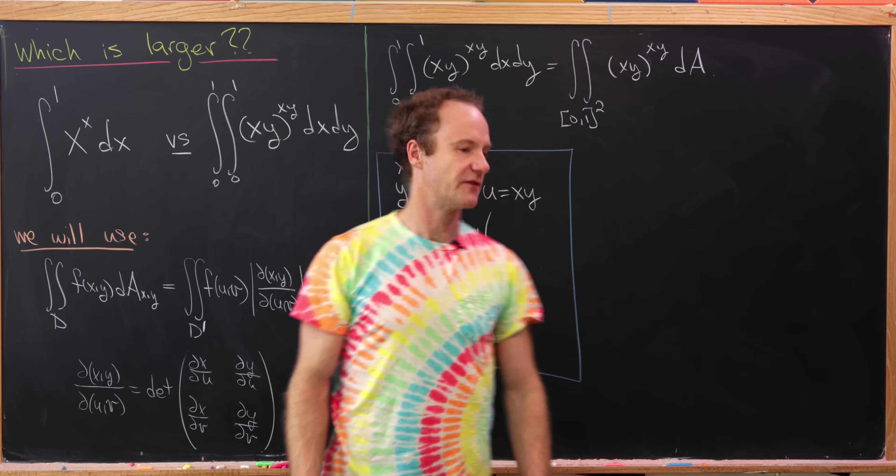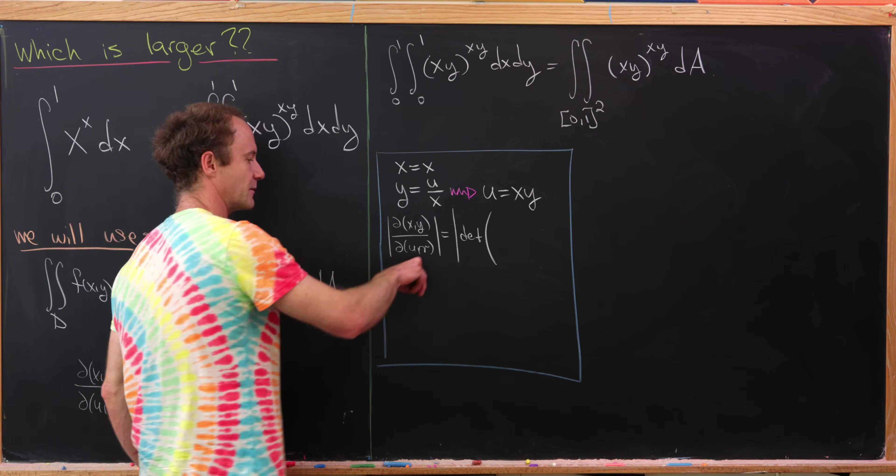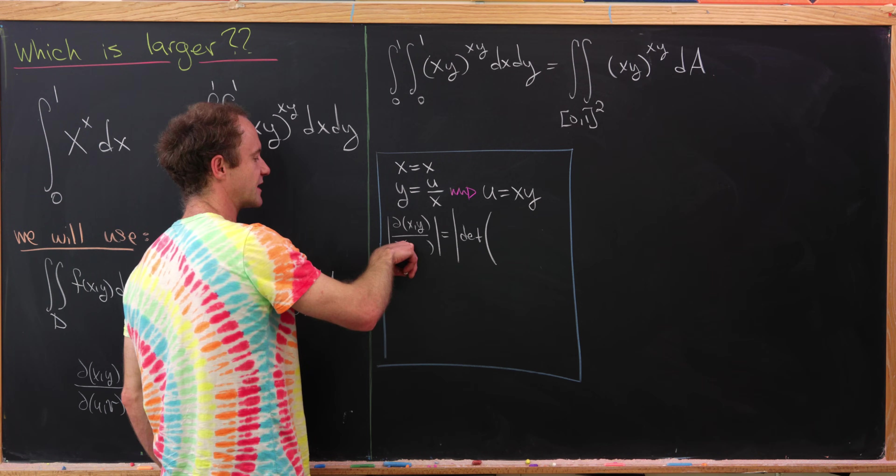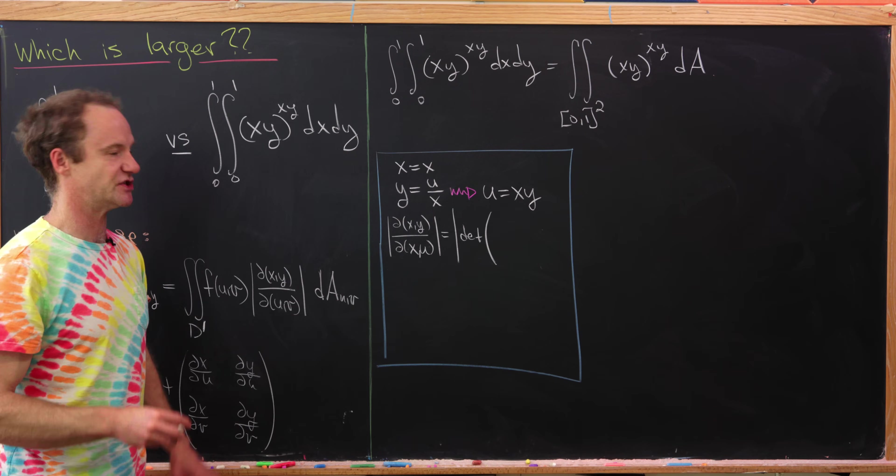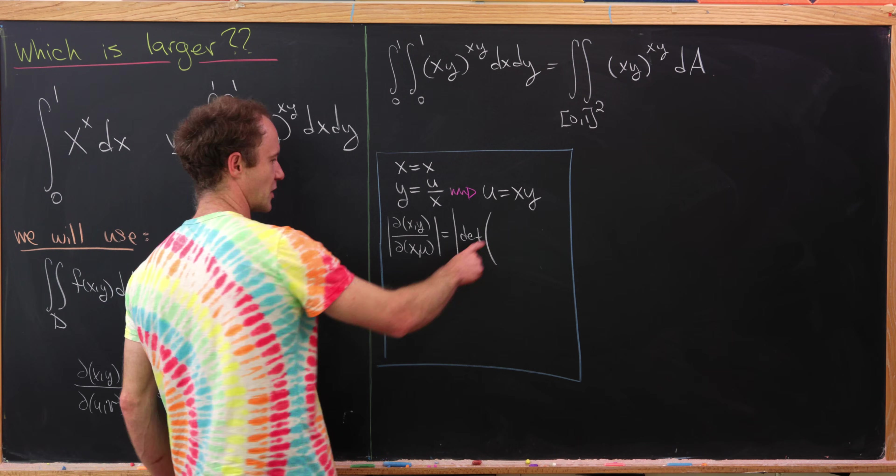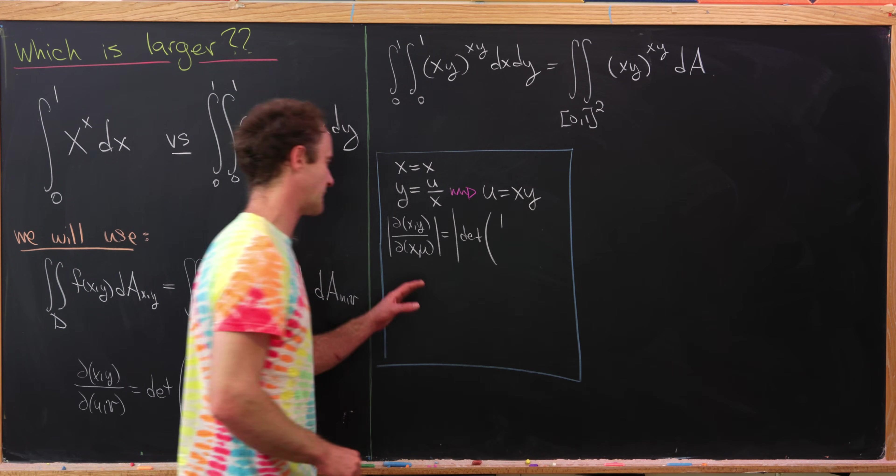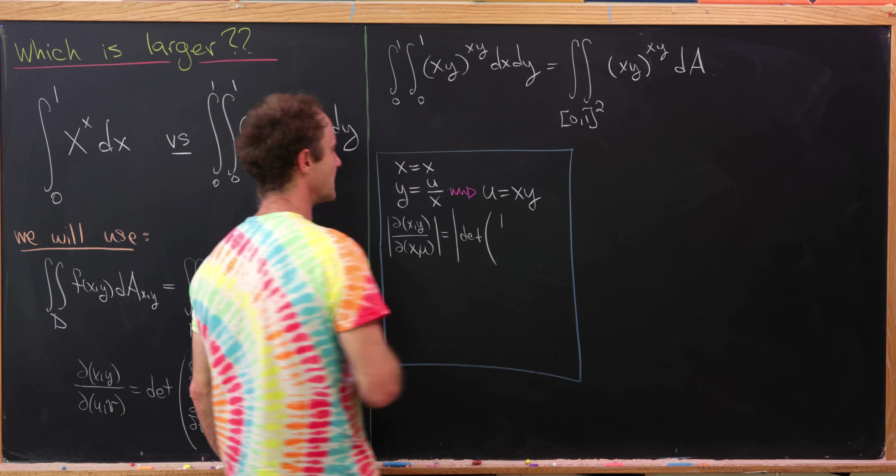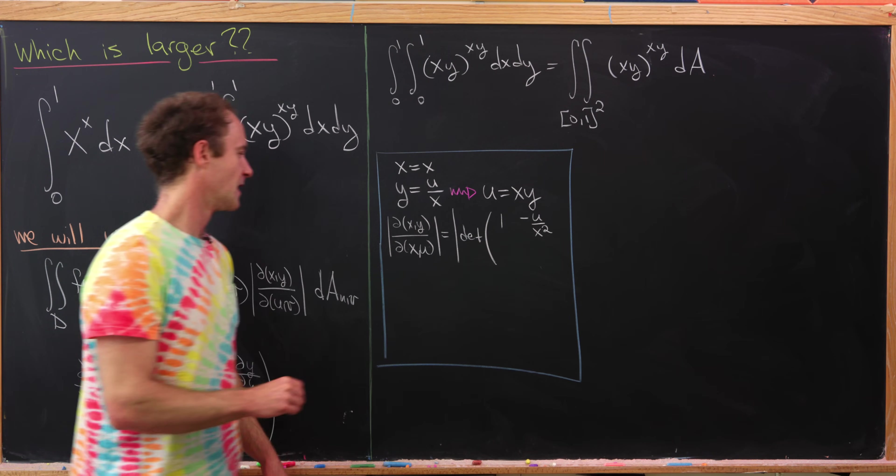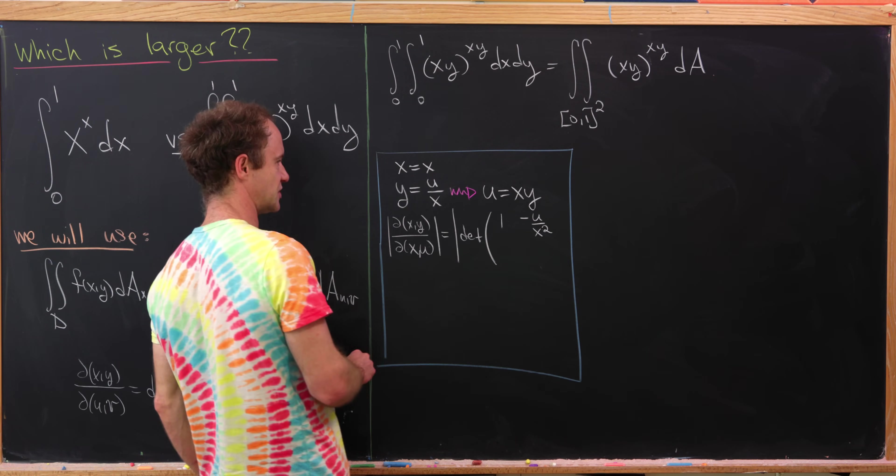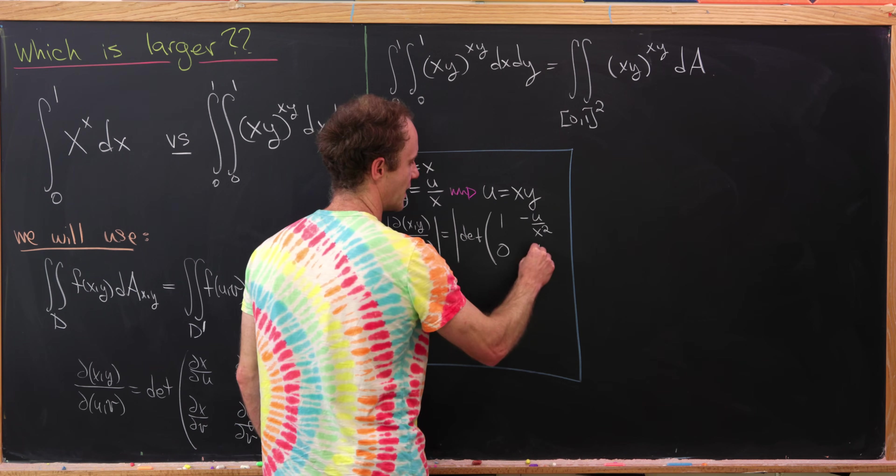Let's see. We need the partial of x with respect to, well, I wrote u down here, but the role of u is really being played by x again. So that was a slip up. I'll put dx, u down here. Instead of u, v, we're using x, u as our new variables. So the partial of x with respect to x is 1, and the partial of y with respect to x in our new variable is minus u over x squared. And the partial of x with respect to u is 0, and the partial of y with respect to u is 1 over x.